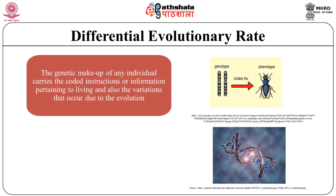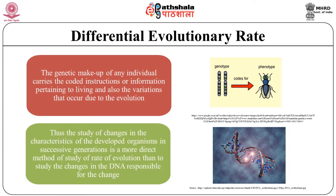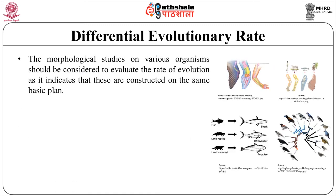The genetic makeup of any individual carries coded instructions pertaining to living and also to the variation that occurs due to evolution. If these genetic instructions are decoded, one can learn how life was lived in the past. This is done by studying phenotypes and their means of homeostasis. The study of change in characteristics of a developed organism in successive generations is a more direct method of studying the rate of evolution than studying the change in DNA. Thus, morphological studies on various organisms should be considered to evaluate the rate of evolution, as they indicate that organisms are constructed on the same basic plan.